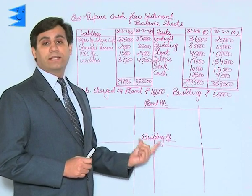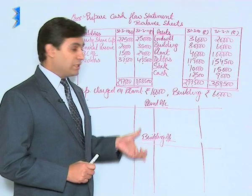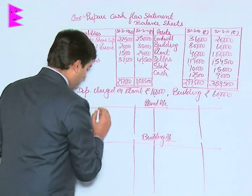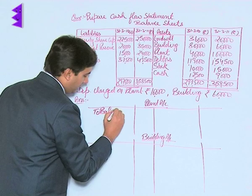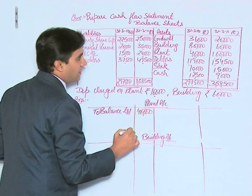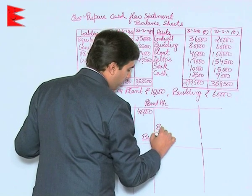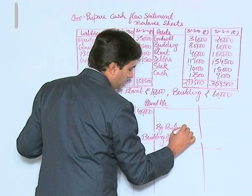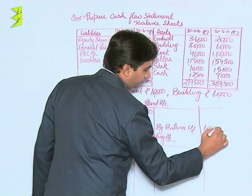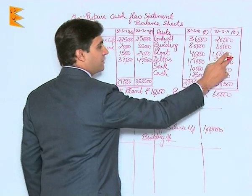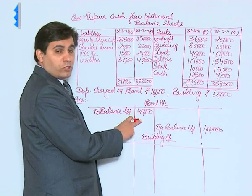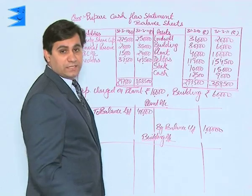These are part of working notes, that is why I have prepared T-shaped accounts. Plant account has an opening balance — balance brought down — of 40,000, and the closing balance carried down is one lakh. Since plant is an asset, it has a debit balance for opening, and the closing will appear on the other side.